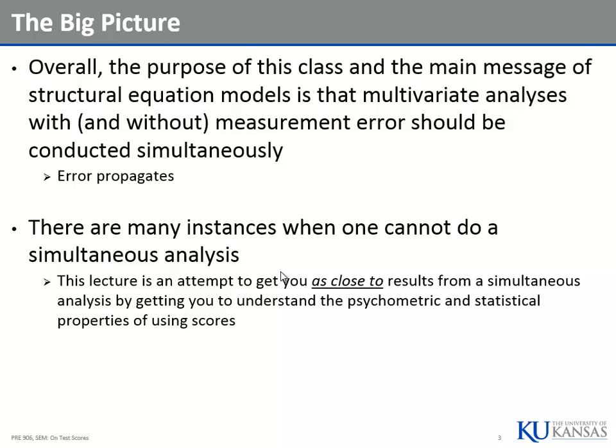Simultaneous analyses are awesome. But how many of you can actually do a simultaneous analysis? It's rarely the case that you've collected enough data. If you've given out 15 different surveys and want to put every item from all 15 into one analysis, how many data points do you need? I'm building this lecture so that next week we can find a solution to get you as close as possible to results from a simultaneous analysis, even if you can't do one.